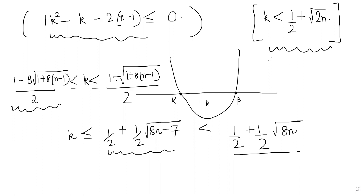The key technique used here is counting the same thing in two different ways — a very common strategy in combinatorics. First we counted edges directly as nC2 from n points. Then we counted edges via circles: n circles, each with at least kC2 chords, minus at most nC2 common chords. Setting these two counts equal gives the desired inequality. This double-counting technique is what this problem is designed to illustrate.